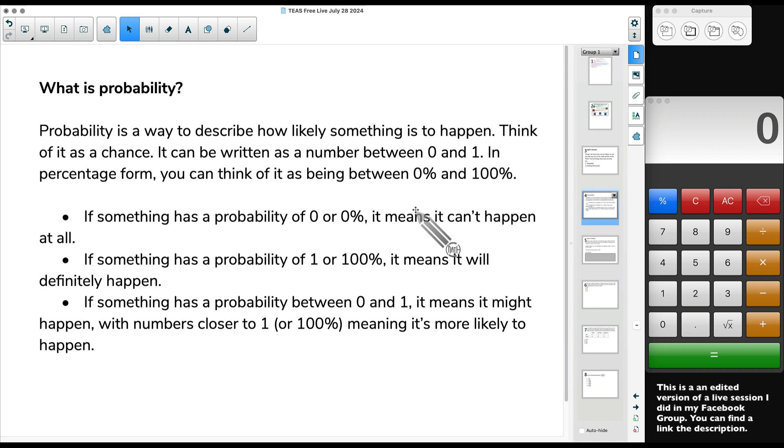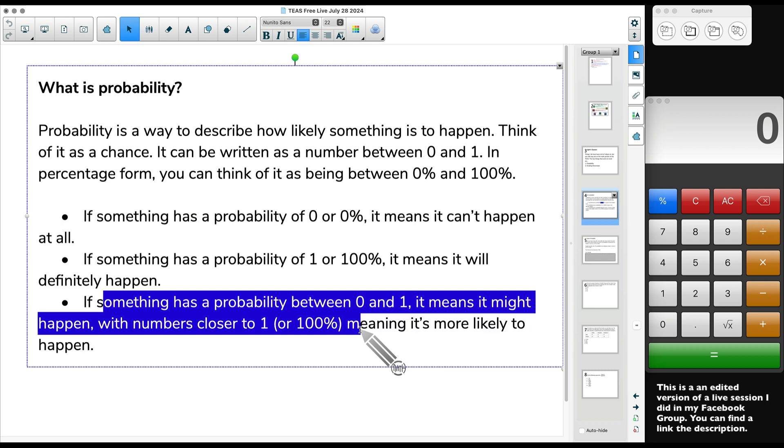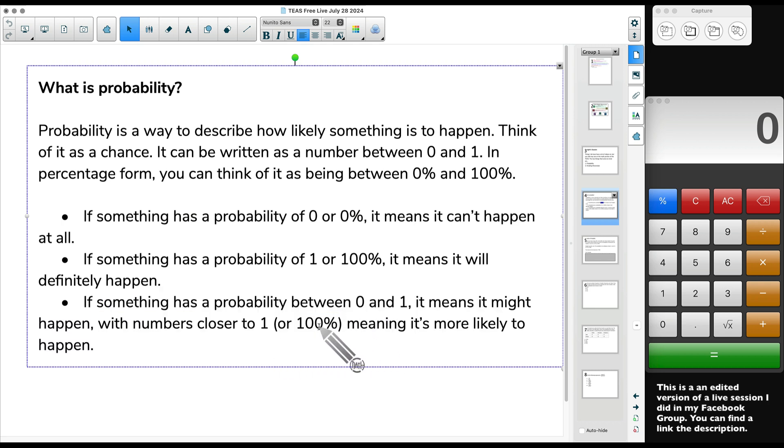If something has a probability of 0, aka 0%, that means it's impossible. It's not going to happen. Now, what about 1 or 100%? That means it's definitely going to happen. We can have a lot of probabilities between 0 or 100%. 0, not going to happen. 100% guaranteed to happen. And then we can have some probabilities in between.